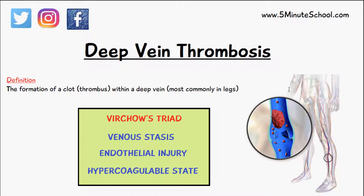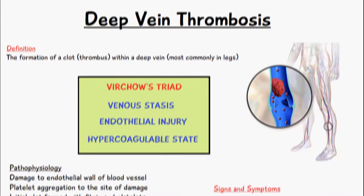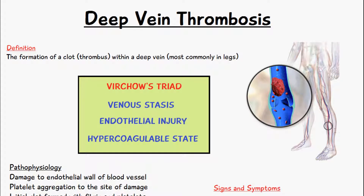In today's video we're going to be talking about deep vein thrombosis. This is where we have the formation of a clot, otherwise known as a thrombus, within a deep vein, and it most commonly occurs in the leg. We can see this diagram here on the right which shows a thrombus in one of the veins of the legs.